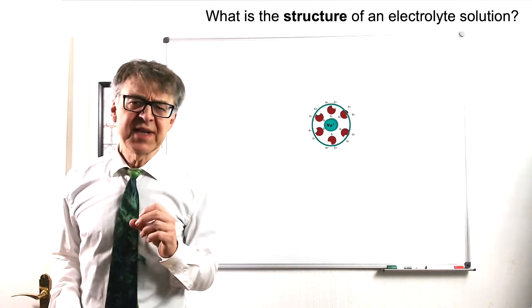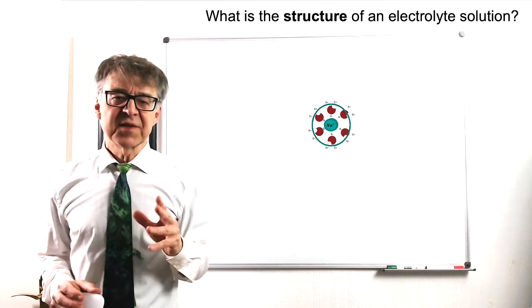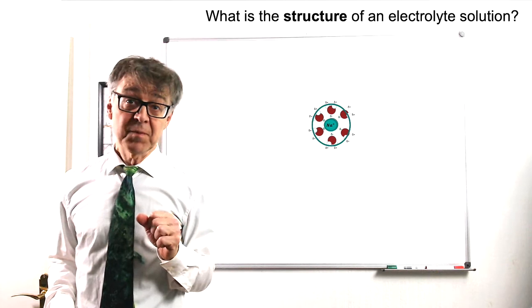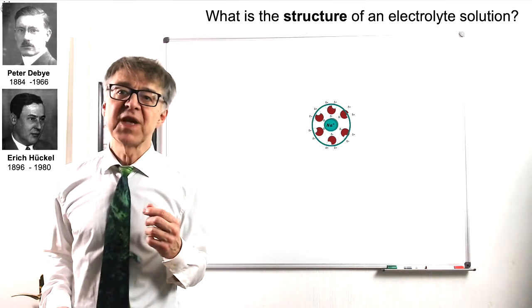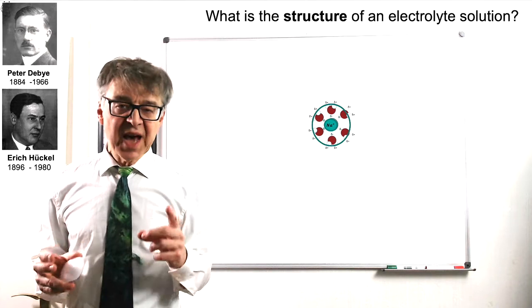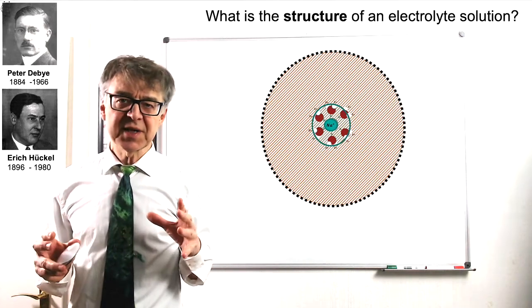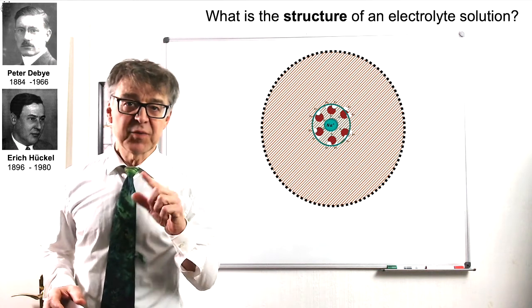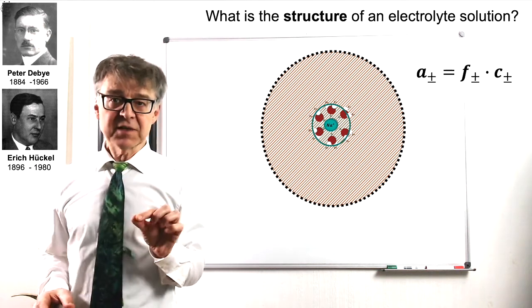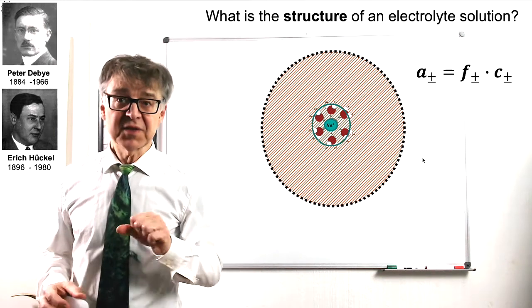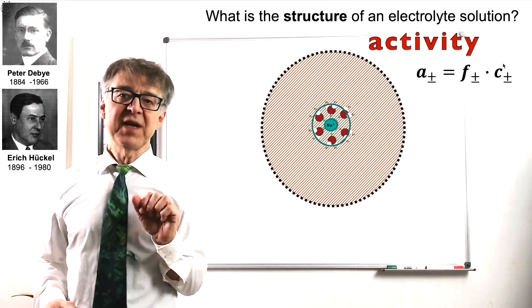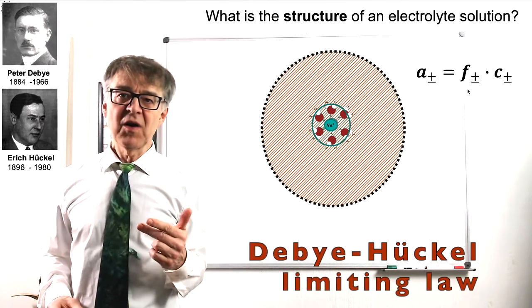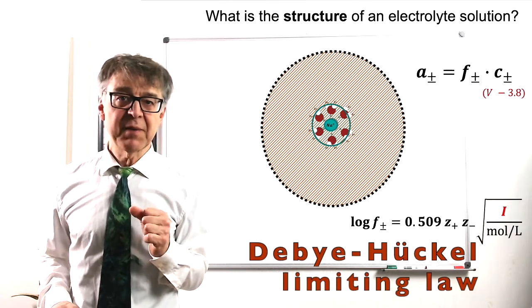Due to the strong electrical interactions between ions, the situation in an electrolyte is generally far from ideal. The situation is described by the theory of Debye and Hückel. The ions in the electrolyte are shielded by an oppositely charged ion atmosphere. As a result, their effective concentration, their activity A, differs from their initial concentration C. Using Debye and Hückel's limiting law, the activity coefficient F can be calculated.